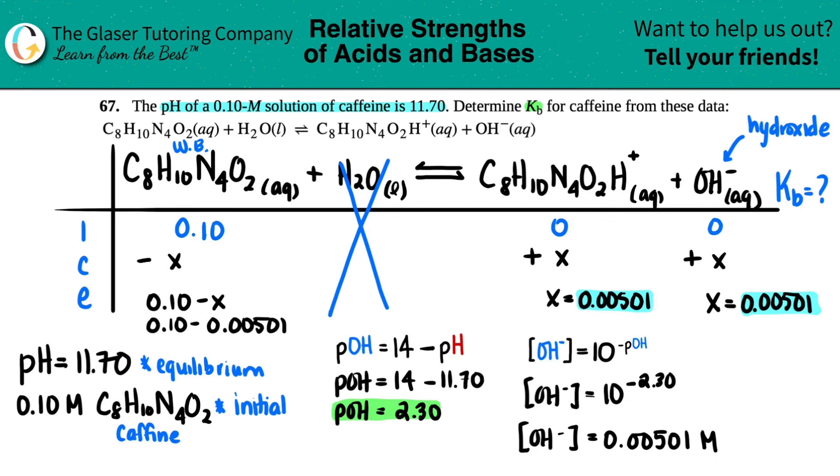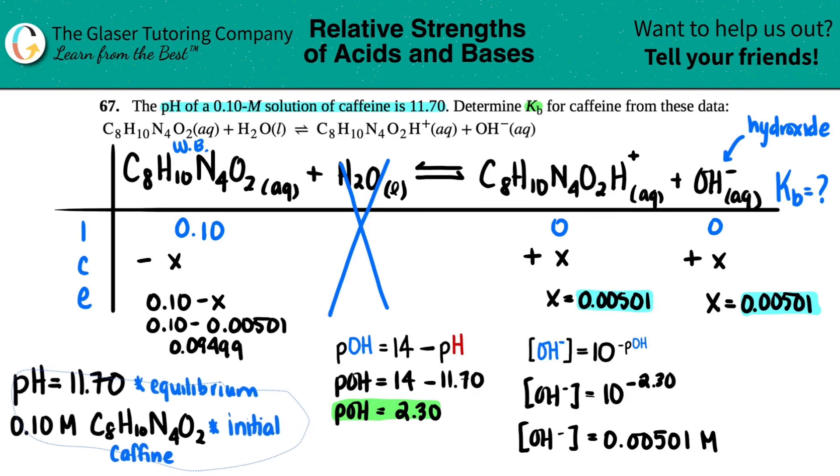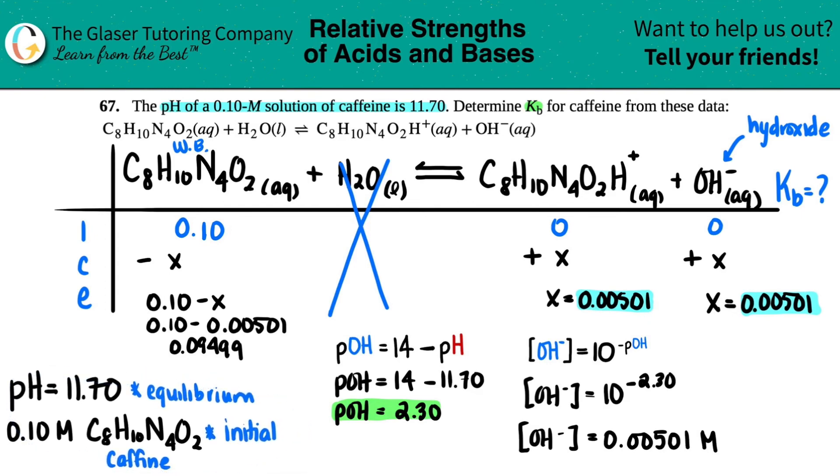So this would be 0.10 minus 0.00501 to get that equilibrium concentration. And we get 0.09499. And that's my third equilibrium value. So pause the video because I just want to erase these because we need to solve for KB. That's the question. So just pause the video if you need to write this down.